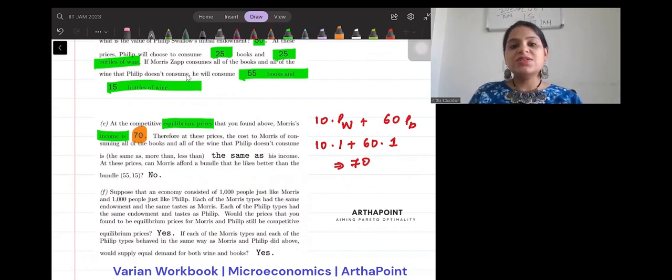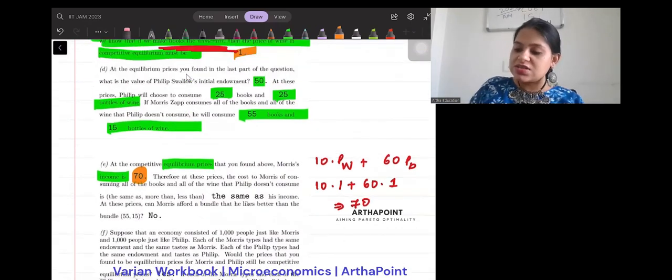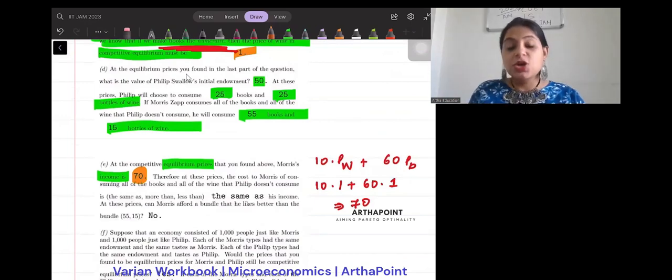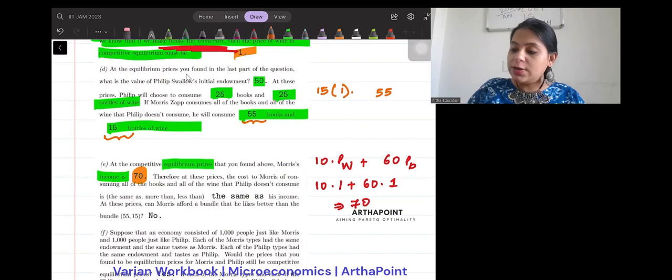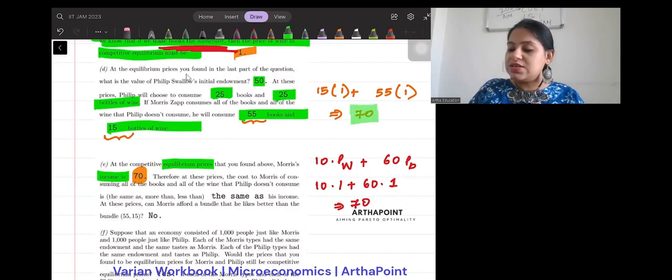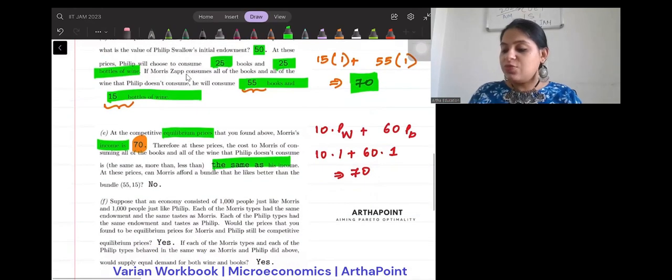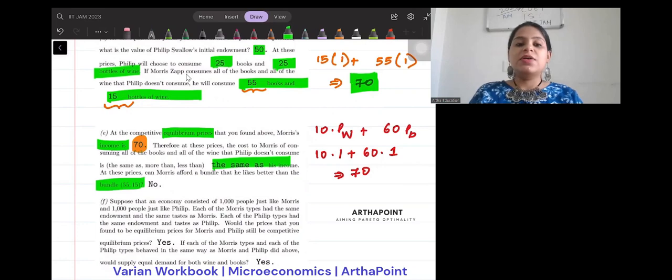Therefore, at these prices, the cost of Morris consuming all books and all the wine that Philip doesn't consume. So, consumption can always take place from income. So, your consumption bundle should lie on the budget line. It should cost you exactly equal to your income. So, if you notice, he is consuming 55 books and 15 wine. So, 15 wine, 55 books. Each unit of wine is priced at 1. So, into 1. Each unit of book is at 1. So, this will also give you 70. So, we see that this also comes down as exactly the same as his income at this price.